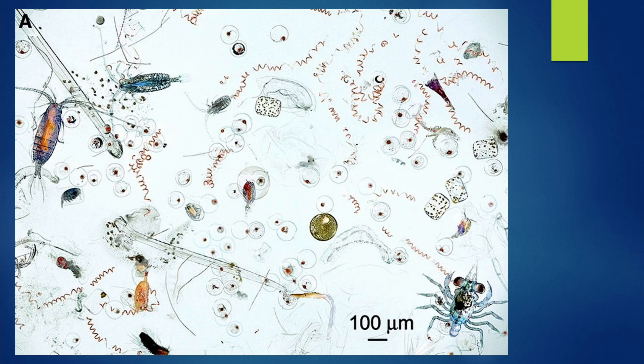Plankton are drifting organisms found in oceans, seas, and bodies of freshwater. They are a diverse collection of organisms that are unable to propel themselves against a current. Although microscopic in size, they play a large role in marine ecosystems.